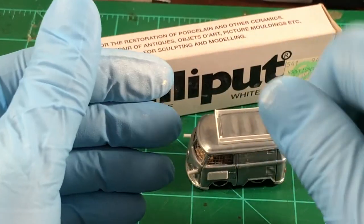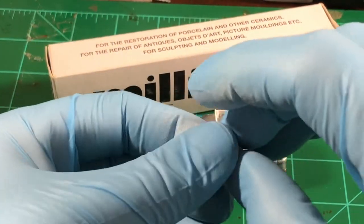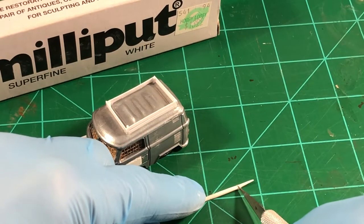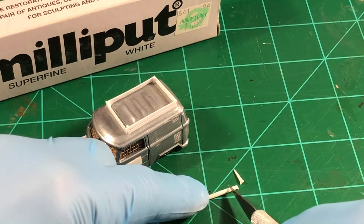This is Millie Putt, a two-part putty, and once mixed together will harden. Before it does, we will make some gear. Taking the putty, I have rolled out a cigar shape and I will begin to cut them into bedroll shapes.